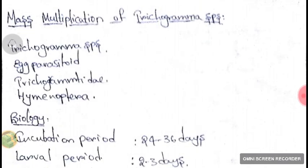Mass multiplication of Trichogramma species. Trichogramma species are egg parasitoids. They belong to the family Trichogrammatidae and order Hymenoptera.